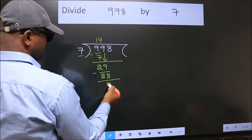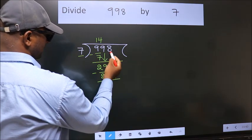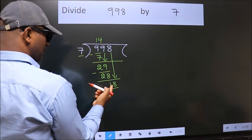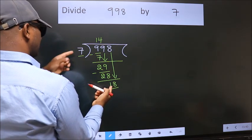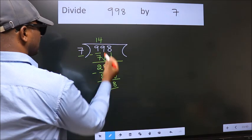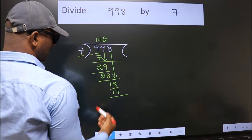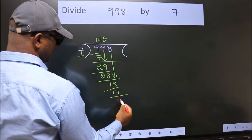After this, bring down the beside number, so 8 down. That's 18. A number close to 18 in the 7 table is 7 twos, 14. Now we subtract. We get 4.